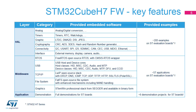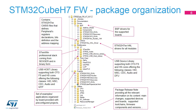Advanced demos putting together all the embedded software components are also provided in the STM32CubeH7 package. There is a complete set of documents including release notes, readme files, and associated user manuals. The packages come with free and user-friendly license terms. Like all STM32 Cube Firmware packages, the STM32CubeH7 firmware solution comes in a single zip file having the structure shown in this slide.